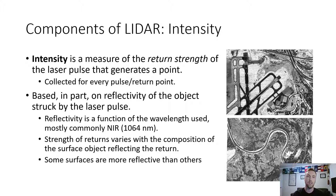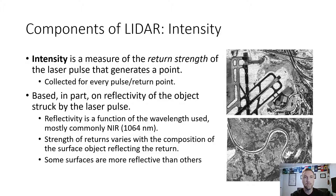Reflectivity is a function of the wavelength used, most commonly near-infrared at about 1,064 nanometers. The strength of the return varies with the composition of the surface of the object reflecting the return. If it is a higher albedo — meaning higher reflectivity, a lighter color like white or light gray — that's going to reflect a higher amount of return. A darker color, like dark black asphalt or water, has a very low reflectivity.